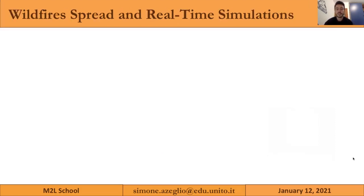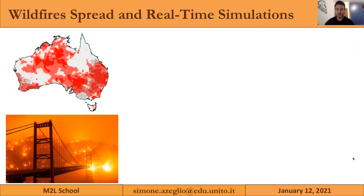Recently, wildfires have been increasingly growing in frequency and intensity, becoming a serious threat for living beings and socio-economic stability all over the world. Both Australia and California have suffered from the most severe wildfire seasons recorded in modern history.